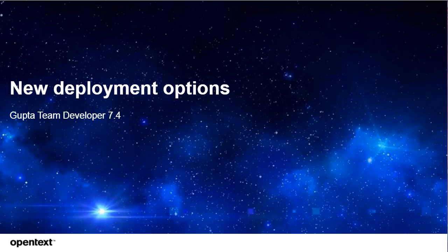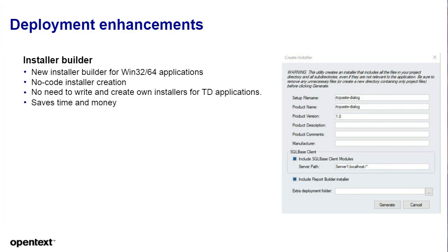Coming to the new deployment options in Team Developer 7.4: we now have an installer builder for Win32 and Win64 applications. You provide a file name, version description, and other details. You can say whether to include the SQL base client modules, provide the SQL server path, and include the Report Builder installer for report execution. You can also include an entire folder with all the files needed for your application. This makes it much easier to deploy your applications at customer sites.